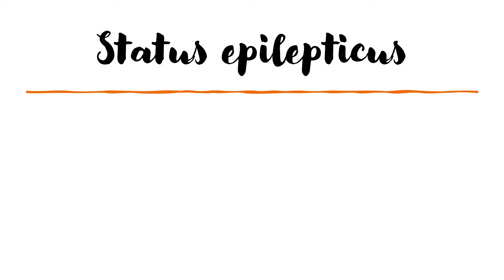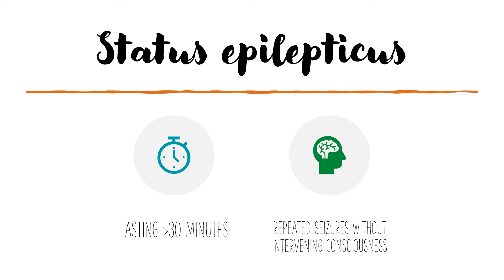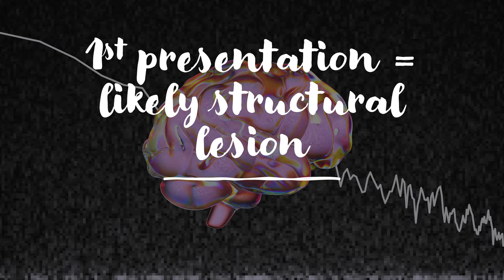The definition of status epilepticus is either a seizure that lasts for more than 30 minutes, or having repeated seizures without intervening periods of consciousness. Although this can happen in patients with known epilepsy, if this occurs as a first presentation seizure, then it's likely that it was caused by a structural brain lesion.